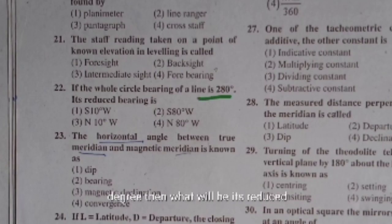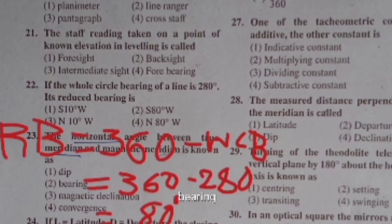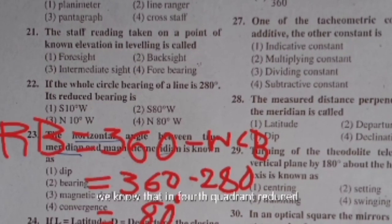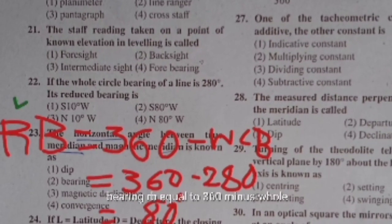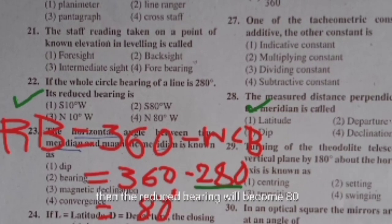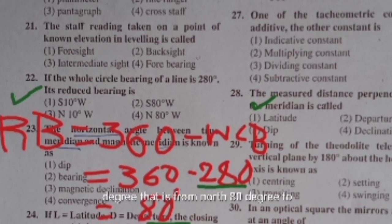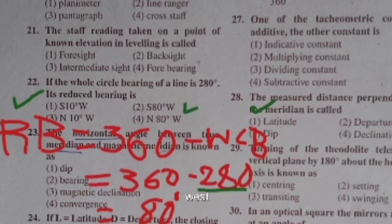If the whole circle bearing of a line is 280 degrees, its reduced bearing is found using the fourth quadrant formula: RB = 360° − WCB = 360° − 280° = 80°, that is N 80° W.